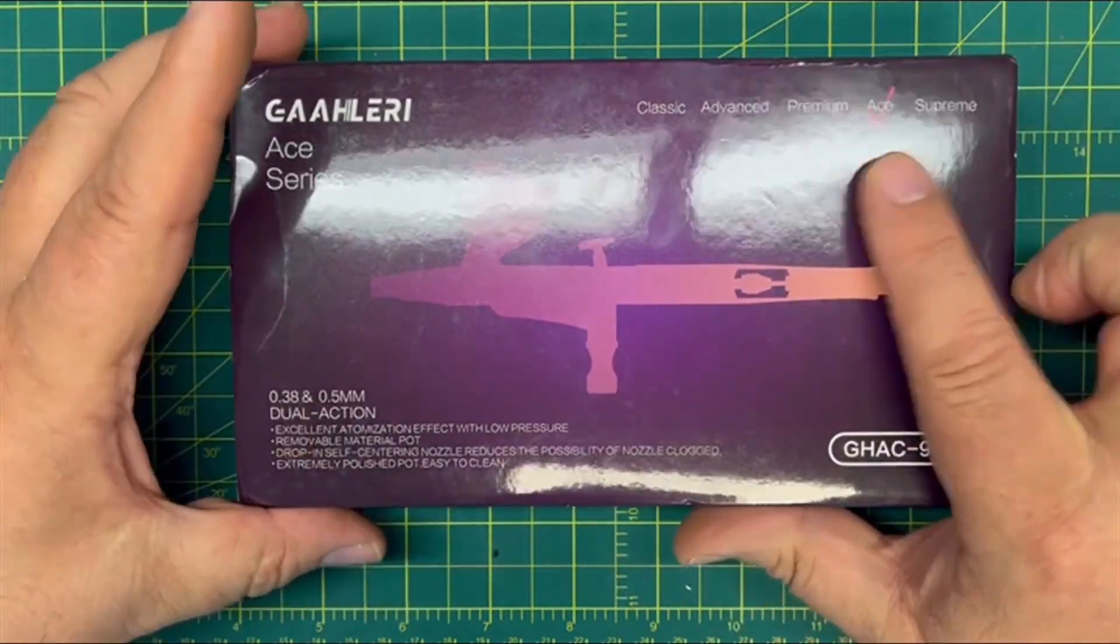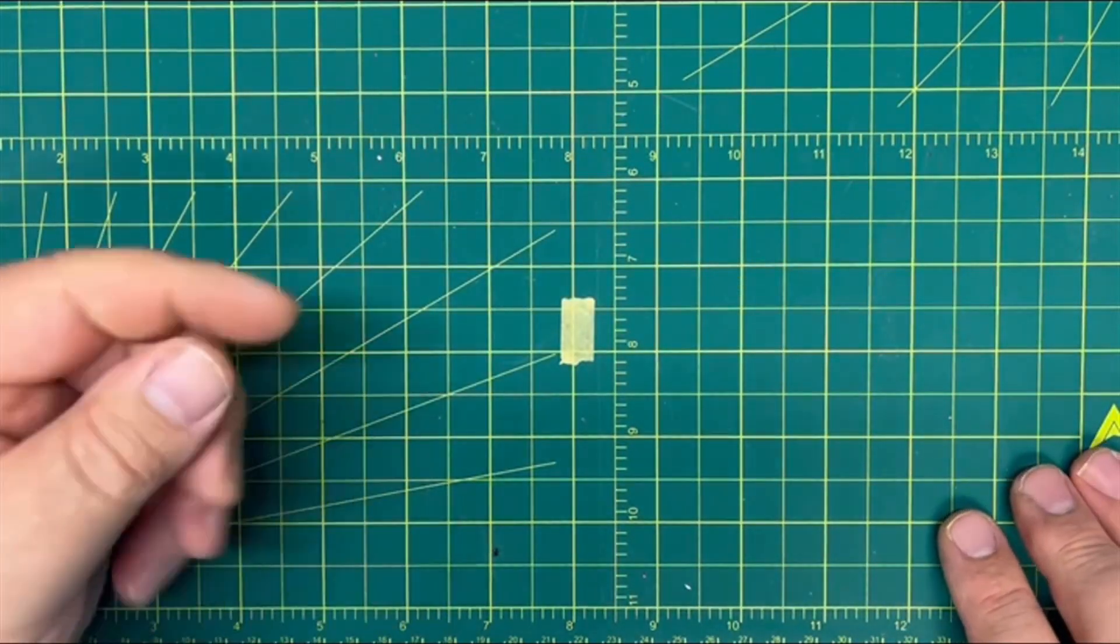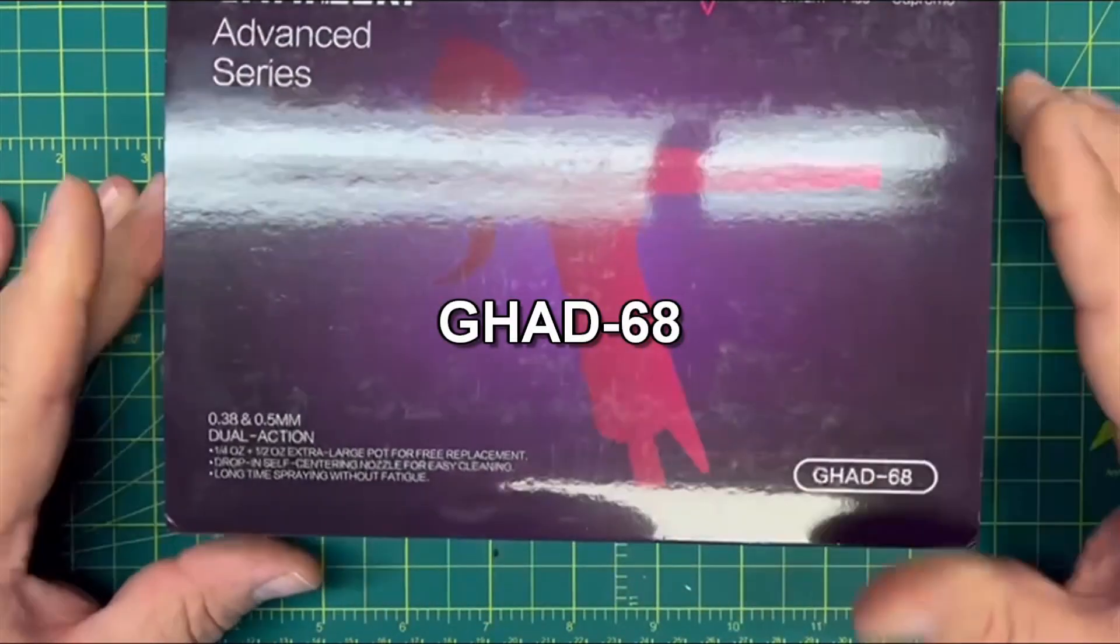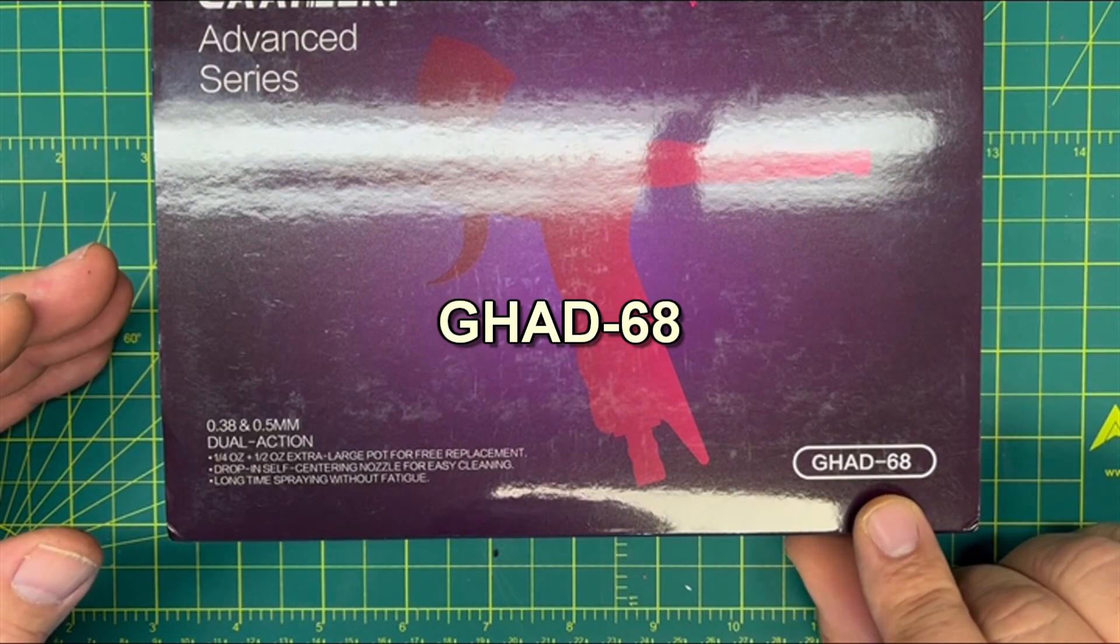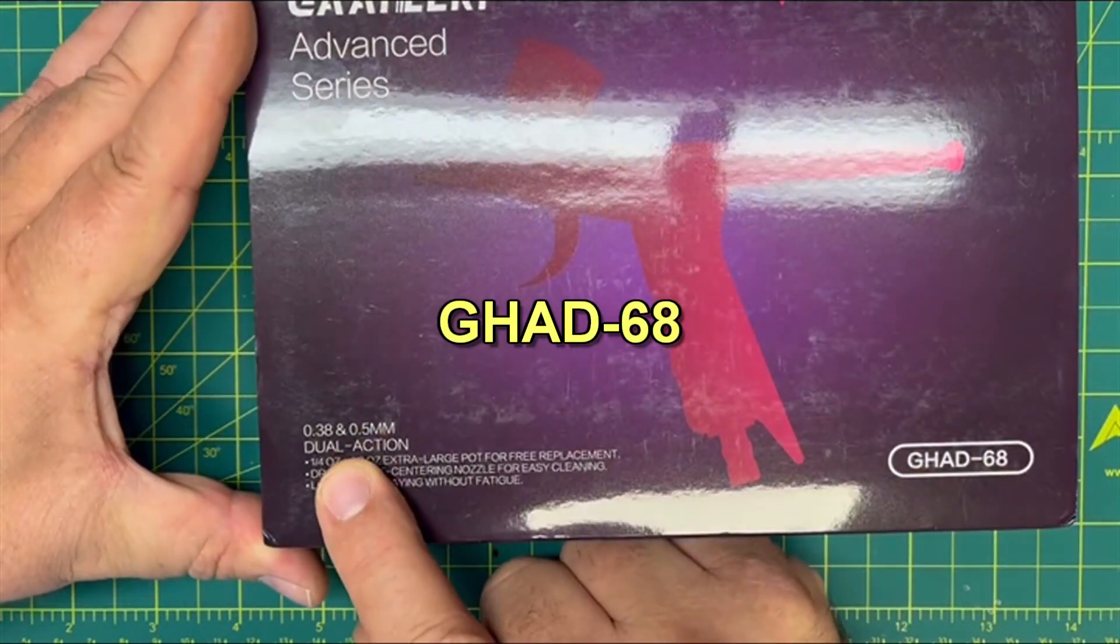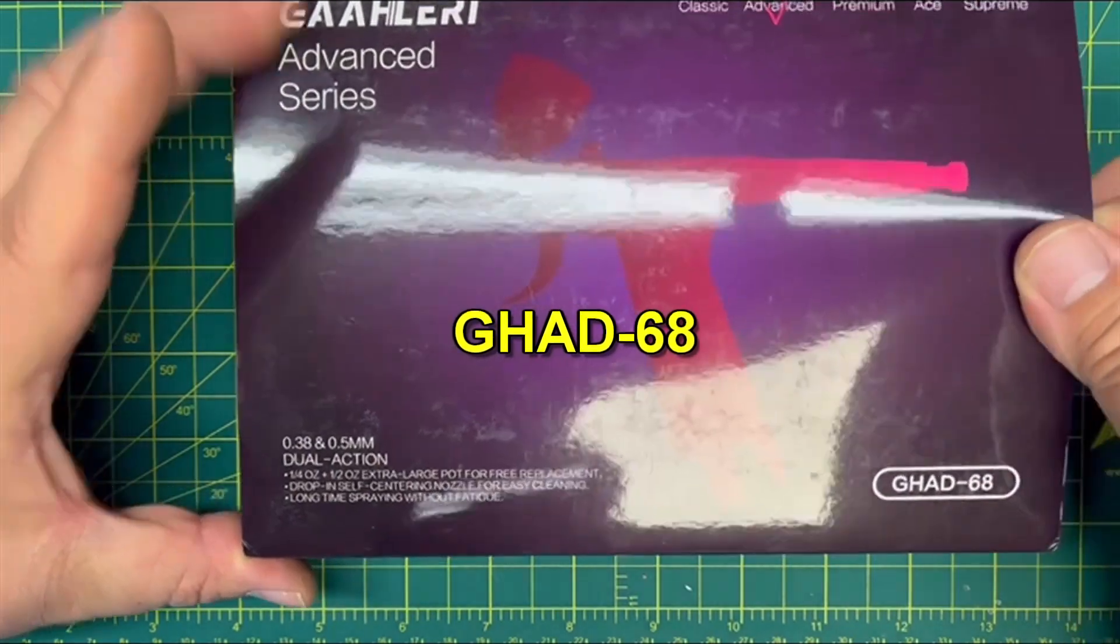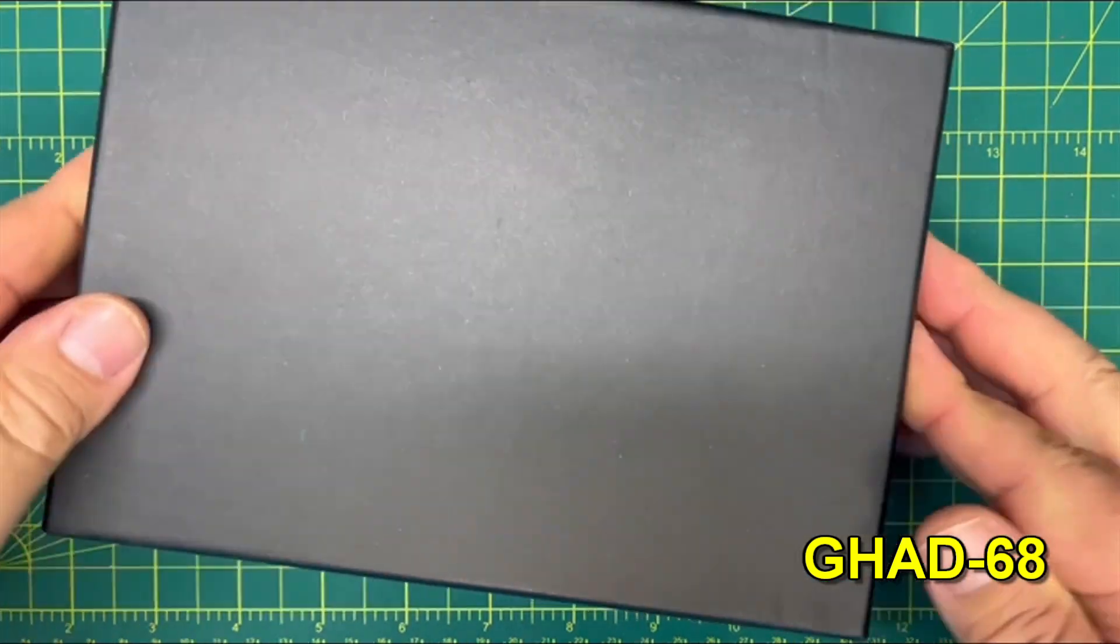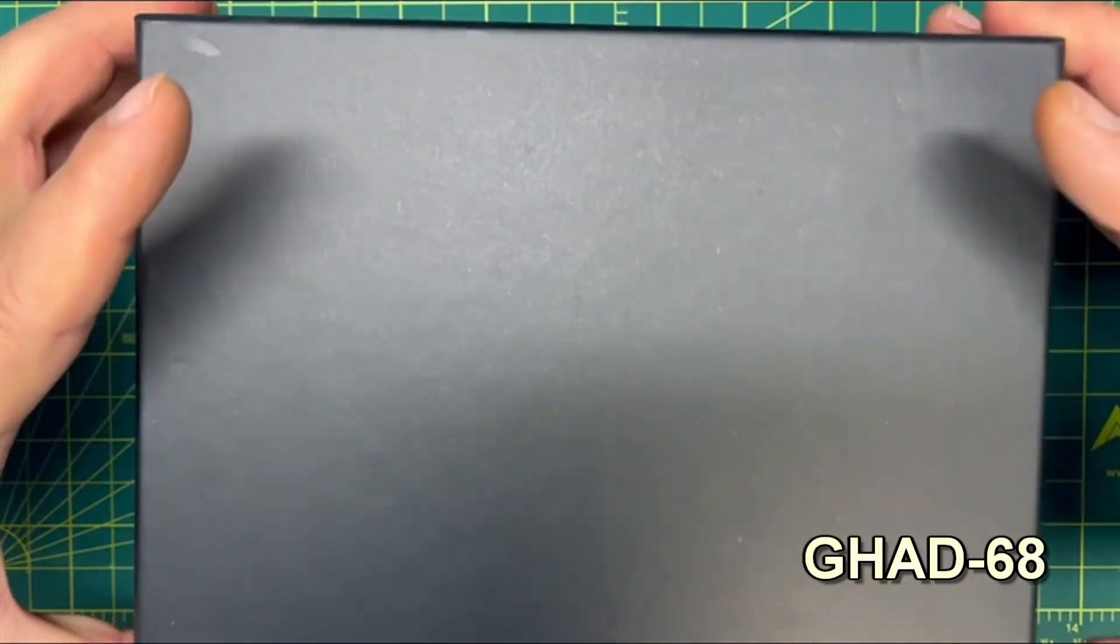Let me put the box on this and just wait a minute because you're going to be blown away here. This is the ace series and like I said, that's a self-centering system. You saw the seat on there for the needle. Now watch this. There you go guys, here's another one. This is the GHAD-68. This is an advance. It has two needles, a 0.38 and a 0.5, just like the other one, and I think you're going to like this.